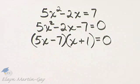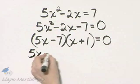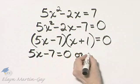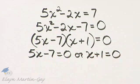So notice I have factored correctly. And now let's set each factor equal to 0. So that's 5x minus 7 equals 0, or x plus 1 equals 0.